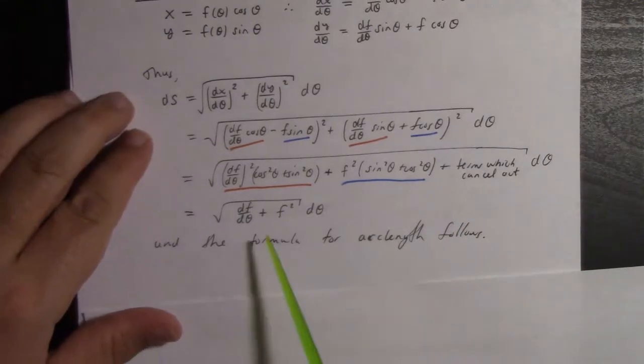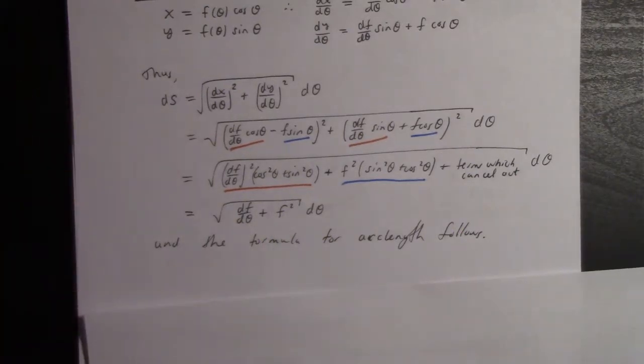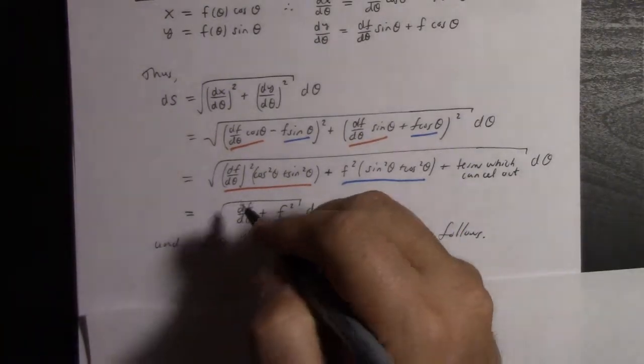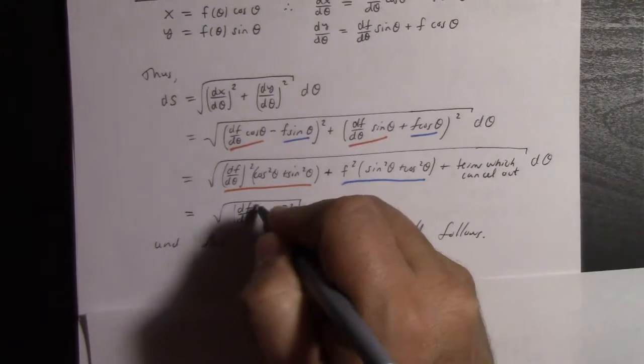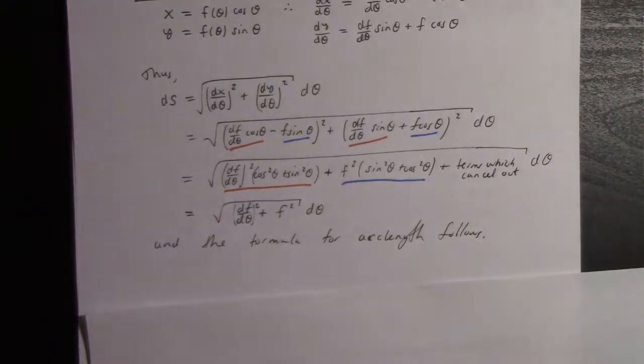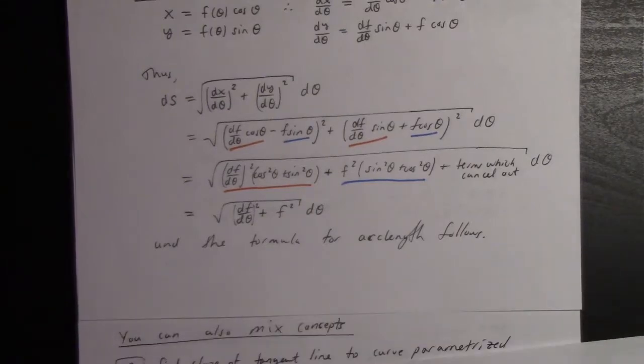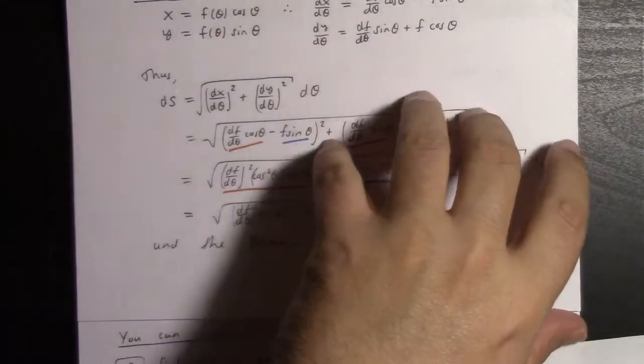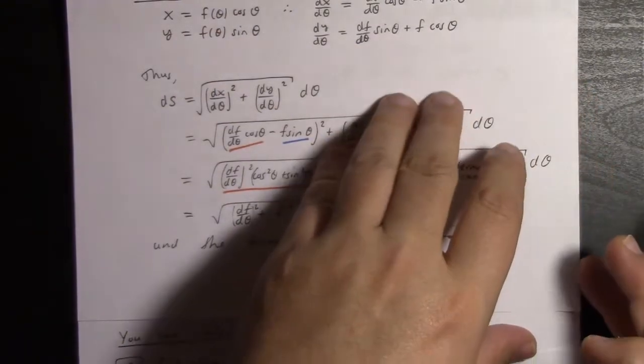This term and this term lead to that term. This squared and that squared lead to that term squared. The cross terms cancel as I described. So lo and behold, ds = √((df/dθ)² + f²) dθ. I got all kinds of typos in here. Integrate that and we get the arc length formula. That's a pretty nice formula.